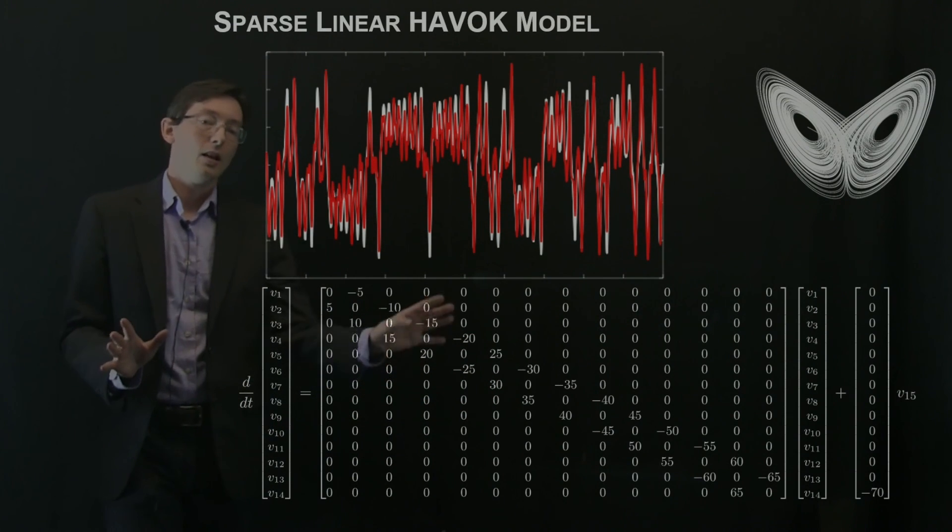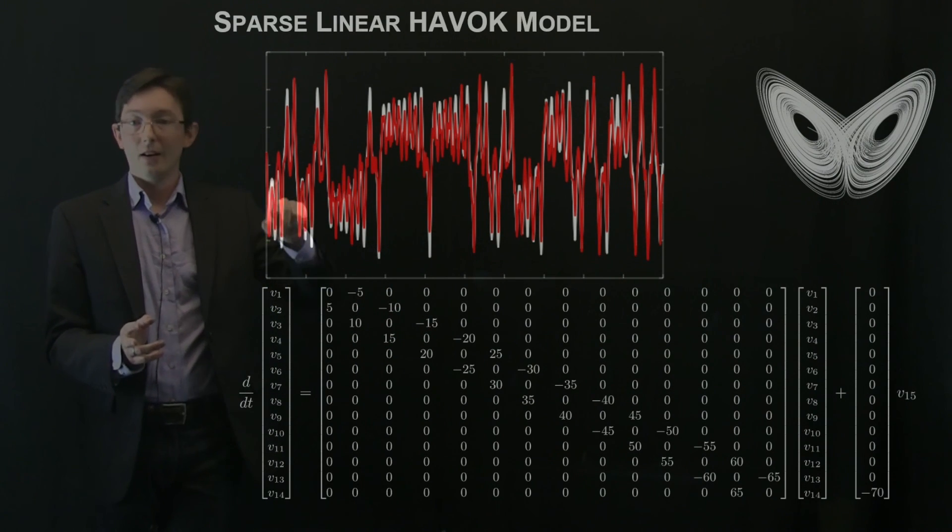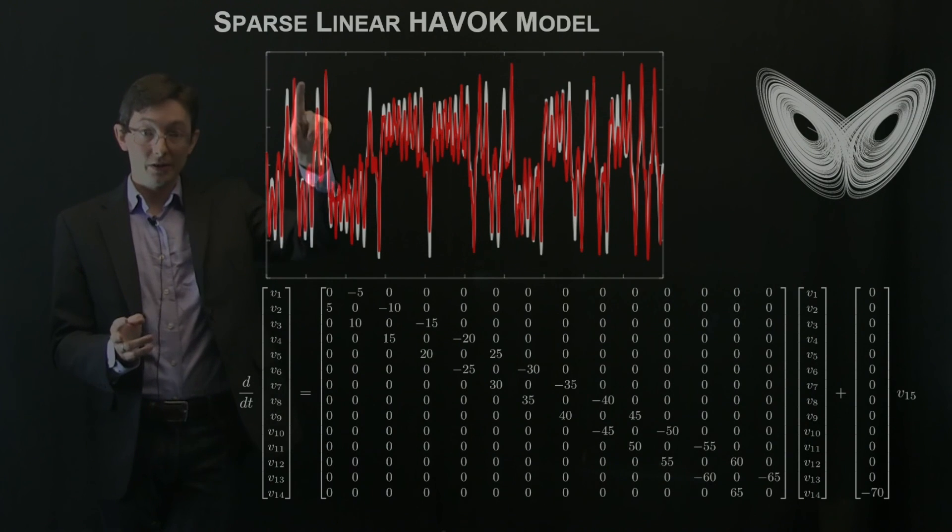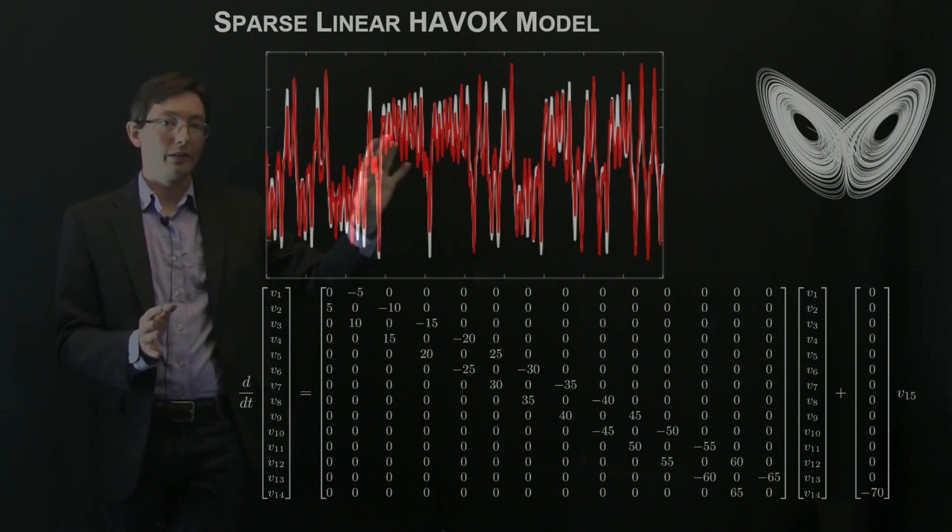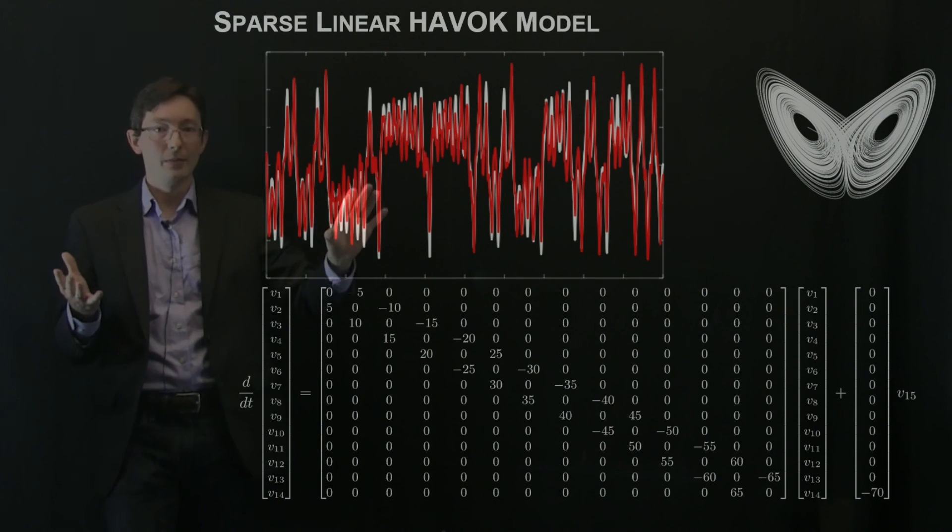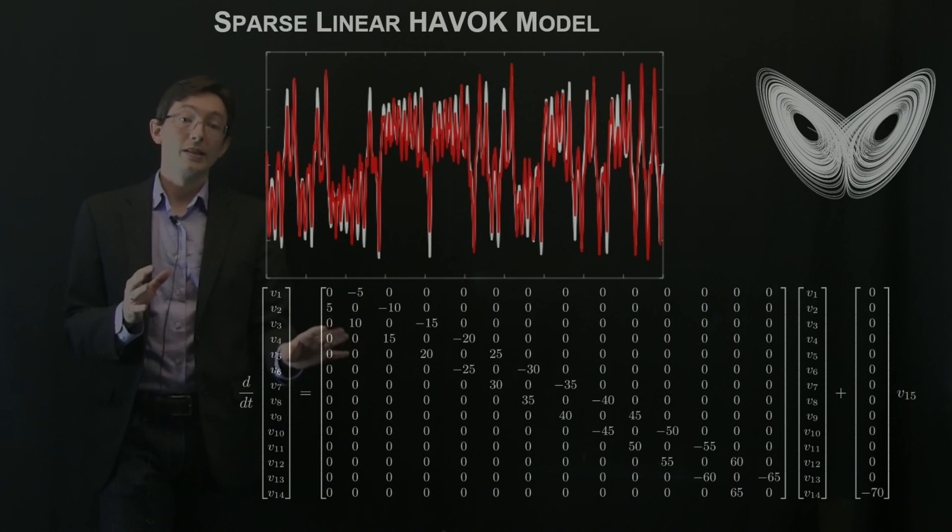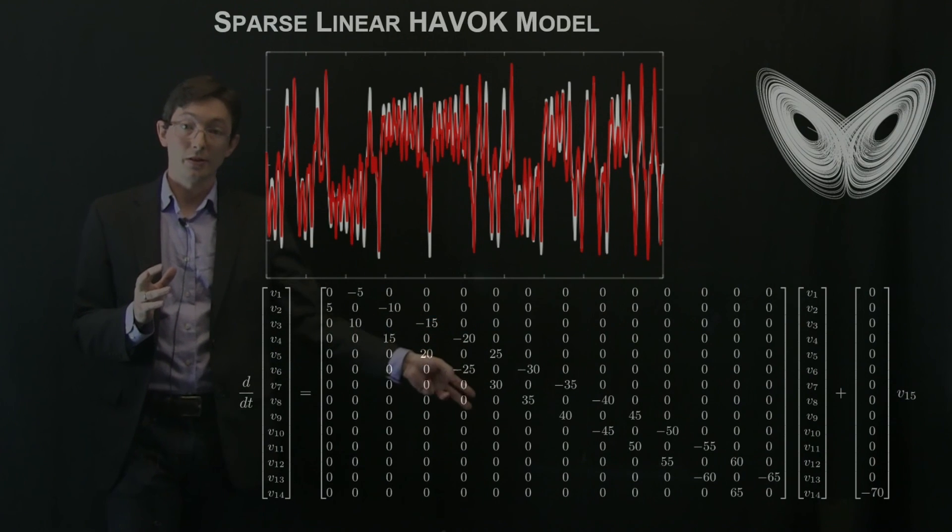You have this system. There's no reason to think that you can get Lorenz dynamics from this highly structured integer dynamical system linear model. Just nuts, right? But if you force this with the forcing that Lorenz is experiencing, you get beautifully the attractor switching, the dynamics on the attractor. It's not perfect, but it's way better than I would have expected.